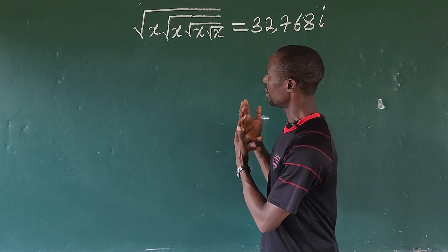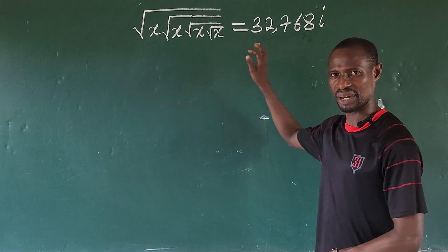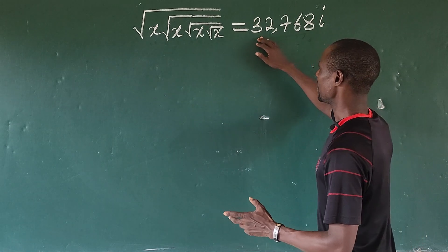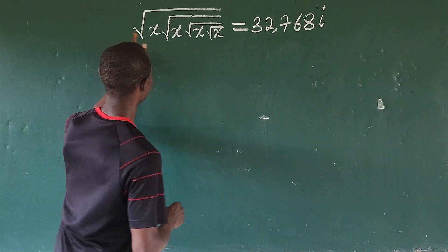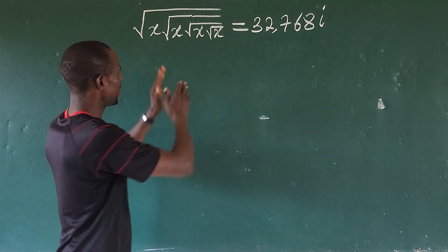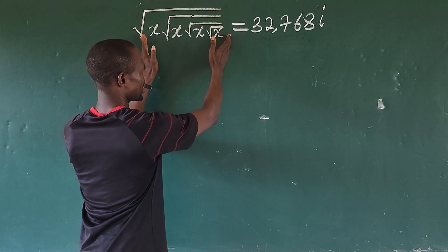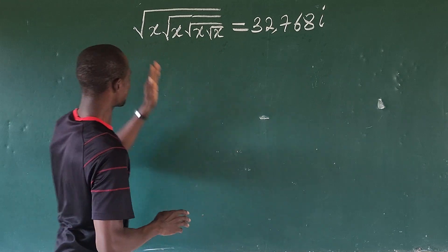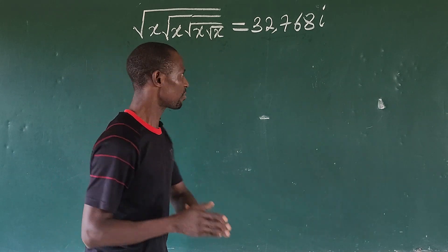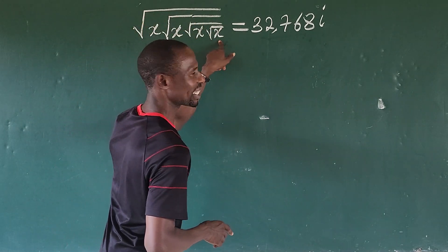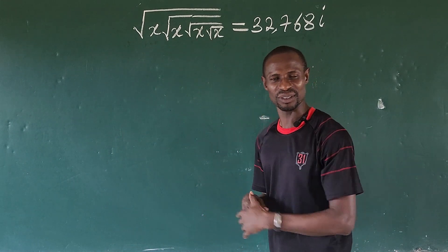I've solved a similar challenge of this kind already on the channel, but in that question the figure on the right-hand side is not an imaginary number — it's a real number, not like this one. The method I used there was to take the square of both sides, squaring from the outside in. But here I want to start from inside out, because of this figure. Let's go into today's challenge without much waste of time.